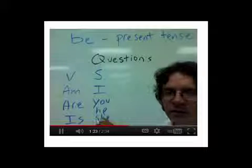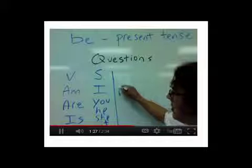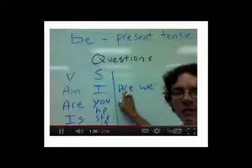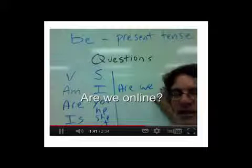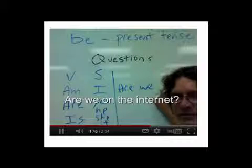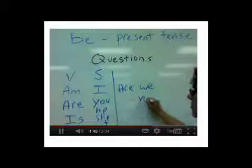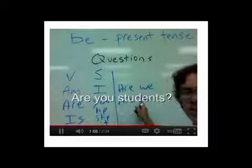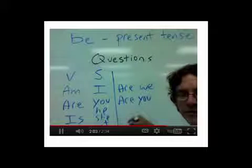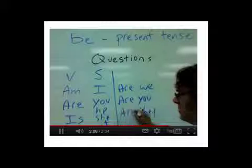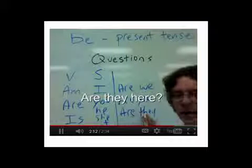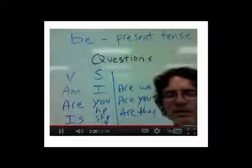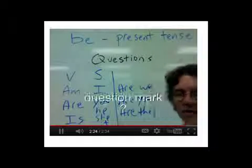These are all singular. To make the plural, if the subject is we, use the verb be are: are we online? Are we on the internet? If the subject is you — the plural form — the verb be is are: are you students? And if the subject is they, the verb be is also are: are they here? Are they online? Are they at school? Don't forget to end each question with a question mark.